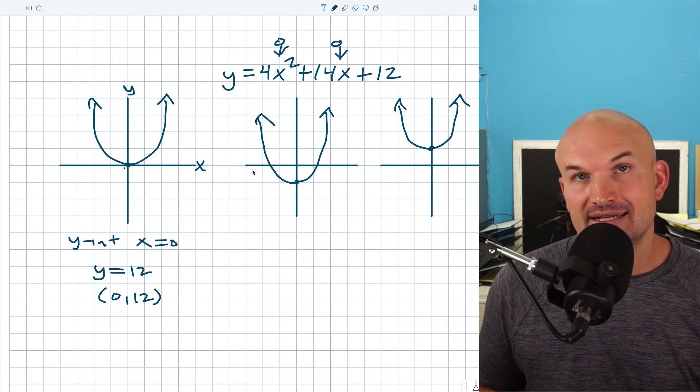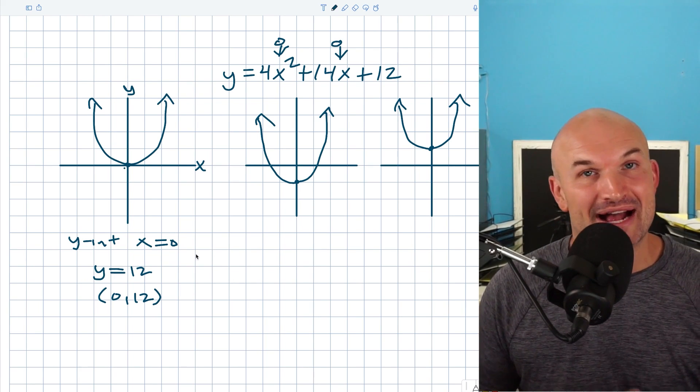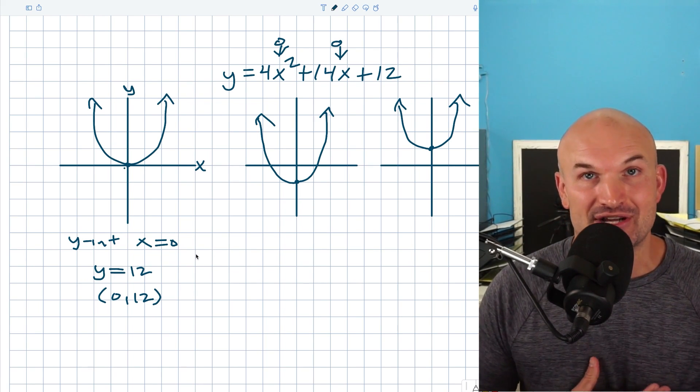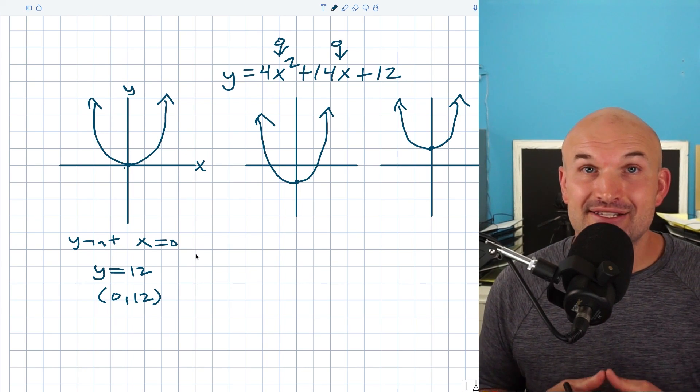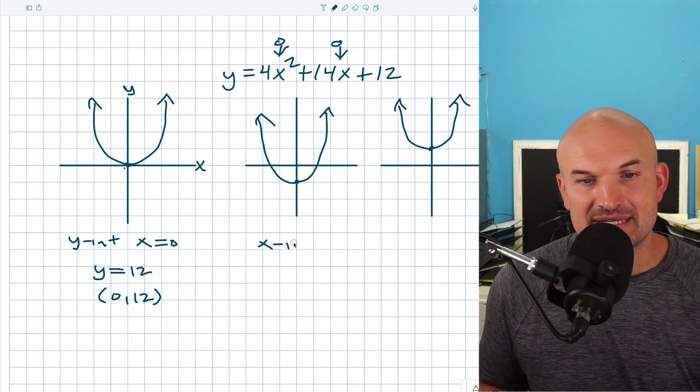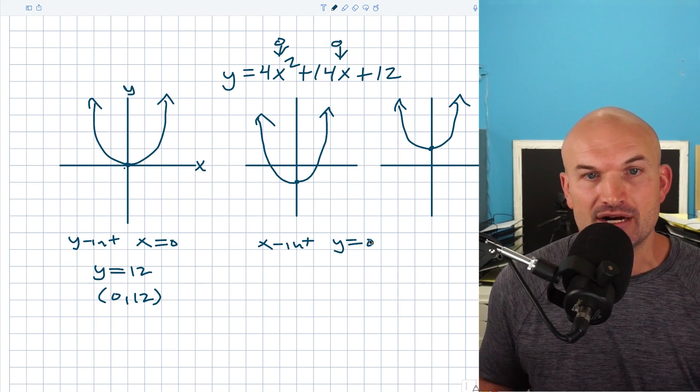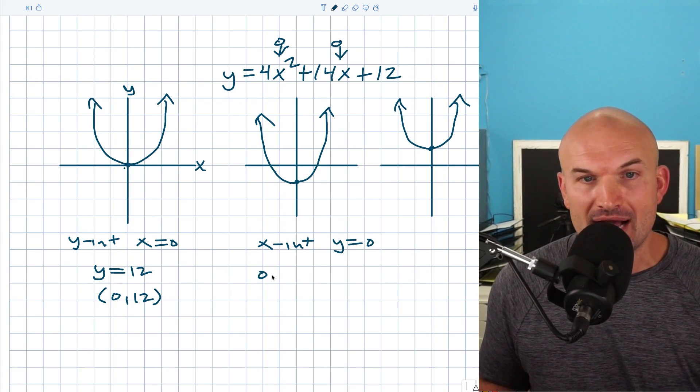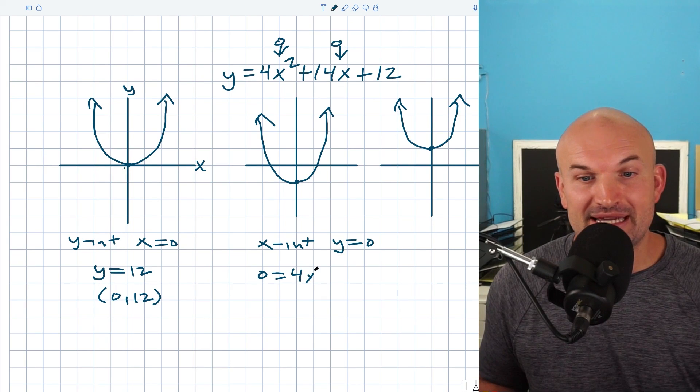And to further complicate things, not always is the graph going to cross at a rational number. Sometimes it's also going to cross at irrational numbers. So the easiest way to find the x-intercepts is to create a quadratic equation. The x-intercept is going to be when y equals zero. So when I replace zero in for y, I now have a quadratic equation that is equal to zero.